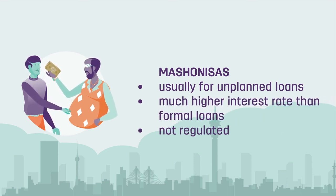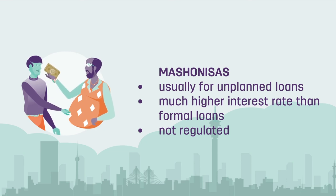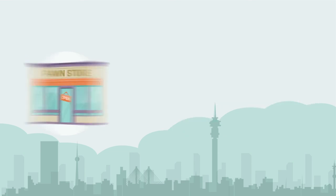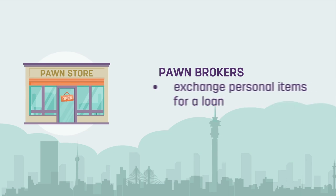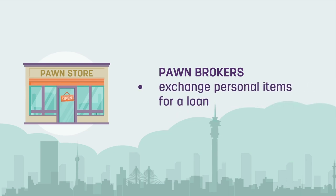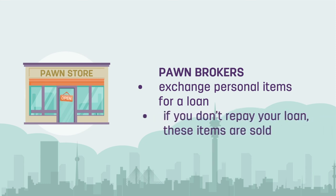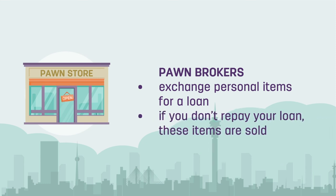Mashonisas are not regulated by the National Credit Regulator. Lastly, there's the pawn broker. This is where you exchange personal items, like appliances or furniture, for a loan. If you are unable to repay your loan, these items will be sold off.